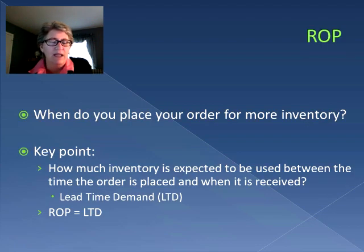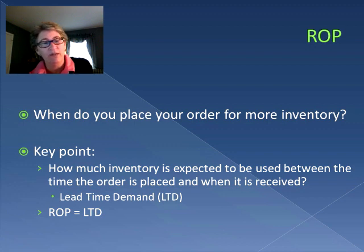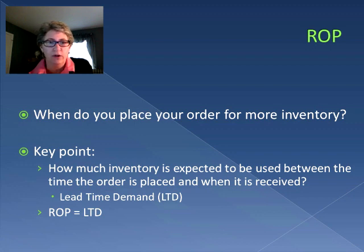Previously, with the economic order quantity, we've determined how much we place in terms of our order for inventory — that's our Q, our quantity for our inventory. But we're trying to figure out when we actually place the order. This is the reorder point.